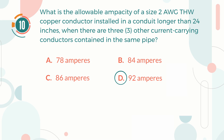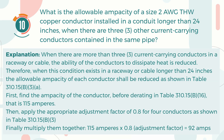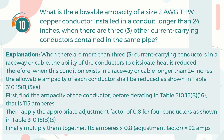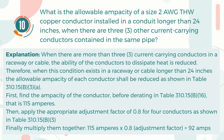The correct answer is D. 92 A. Explanation: When there are more than three current-carrying conductors in a raceway or cable, the ability of the conductors to dissipate heat is reduced. Therefore, when this condition exists in a raceway or cable longer than 24 inches, the allowable ampacity of each conductor shall be reduced per Table 310.15(B)(3)(a). First, find the ampacity of the conductor before derating, as shown in Table 310.15(B)(16), which is 115 A. Then, apply the appropriate adjustment factor of 0.8 for four conductors as shown in Table 310.15(B)(3)(a). Finally, multiply them together to get the answer of 92 A.